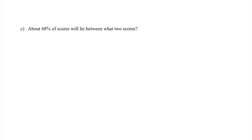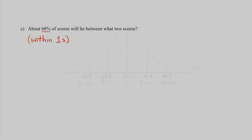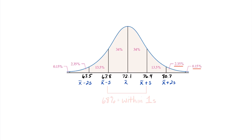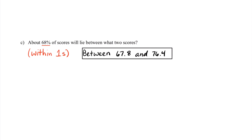Finally, Part C: about 68% of scores will lie between what two scores? 68% is a key number for us with the empirical rule — 68% of our data will fall within one standard deviation. Heading back to our distribution, within one standard deviation our lower value would be 67.8 and our upper value would be 76.4, which means we have our answer for Part C, and we're all set.